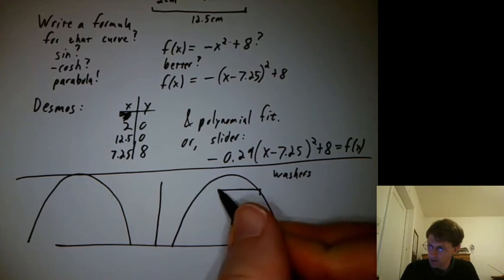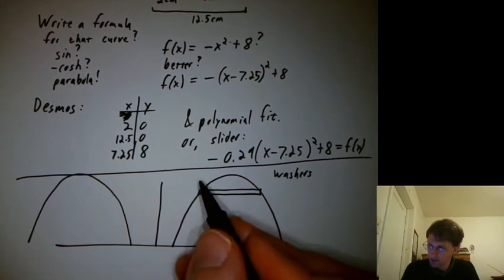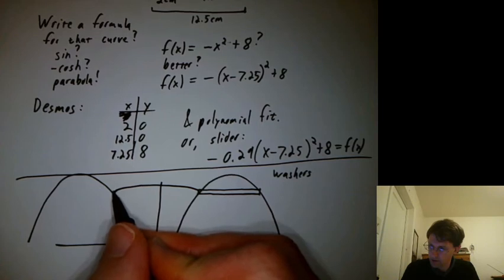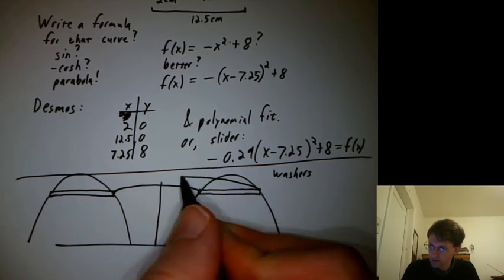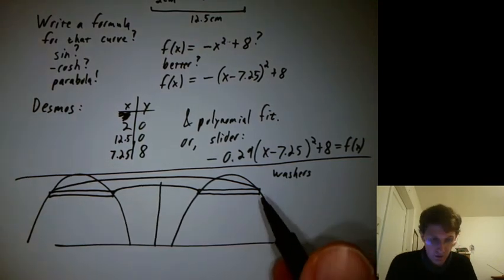So we could draw a washer slice like that and spin it around like that. Looking good so far.